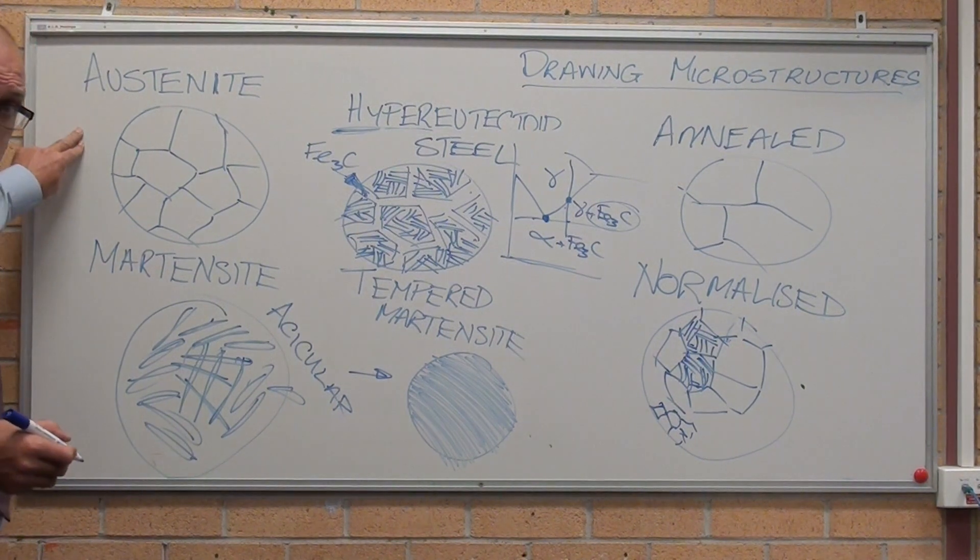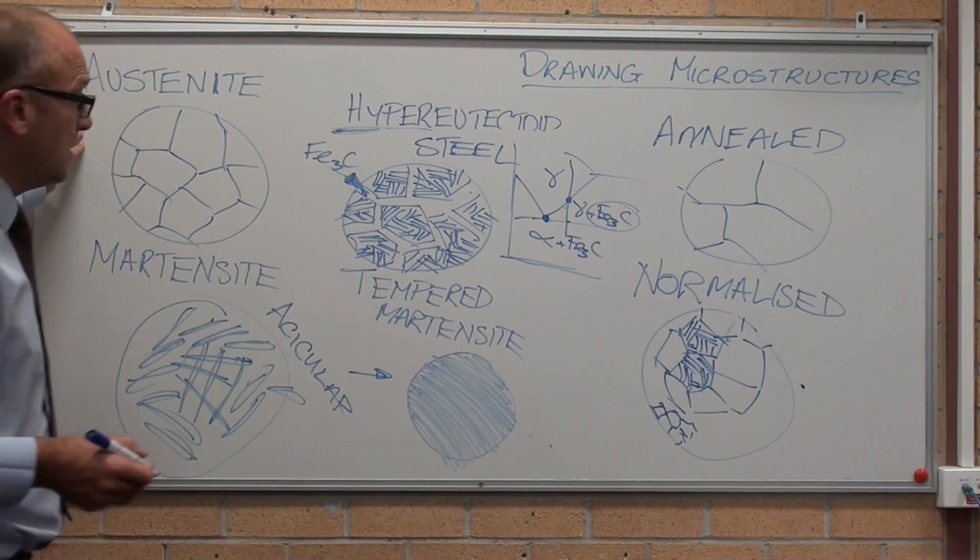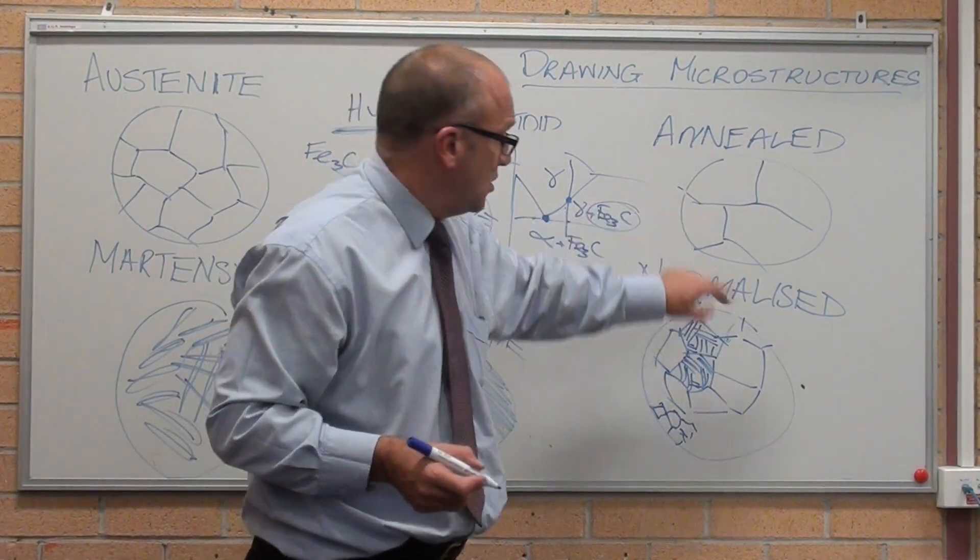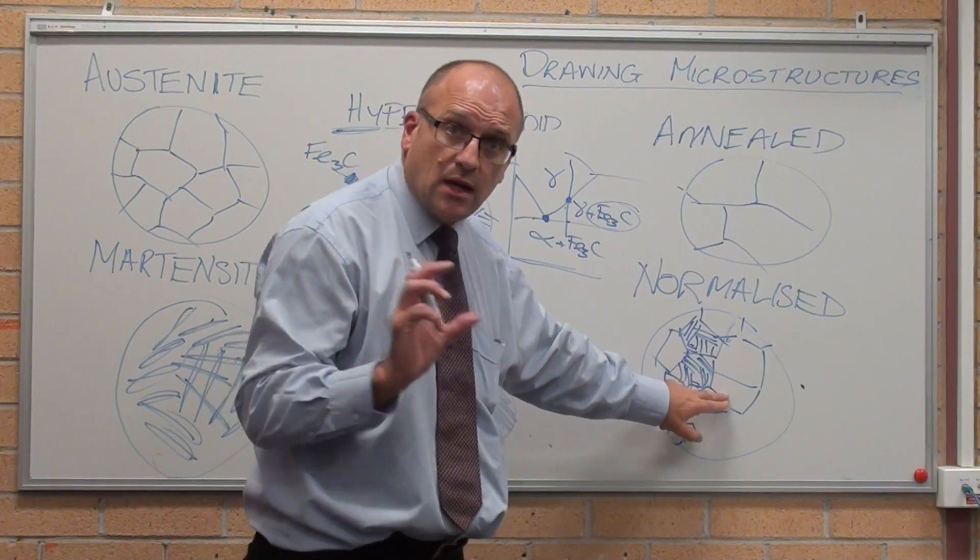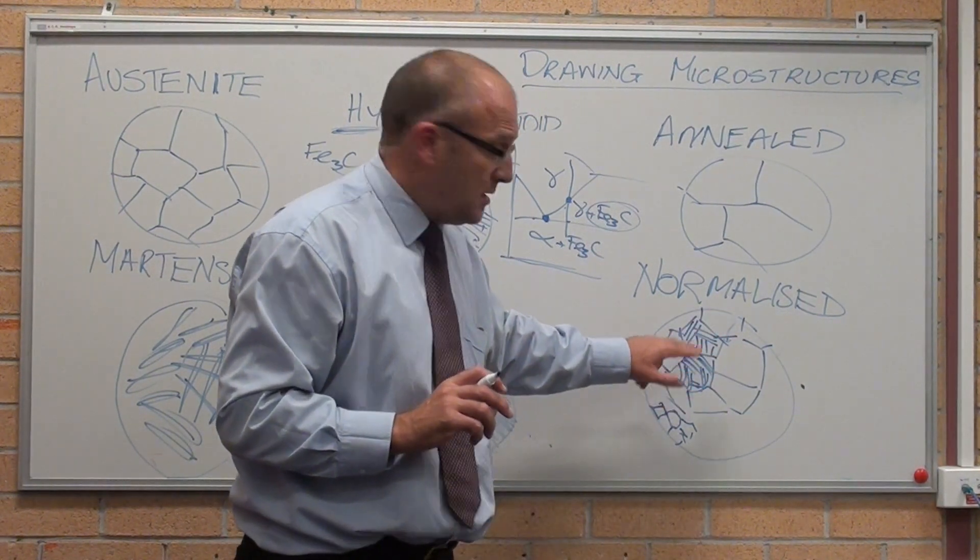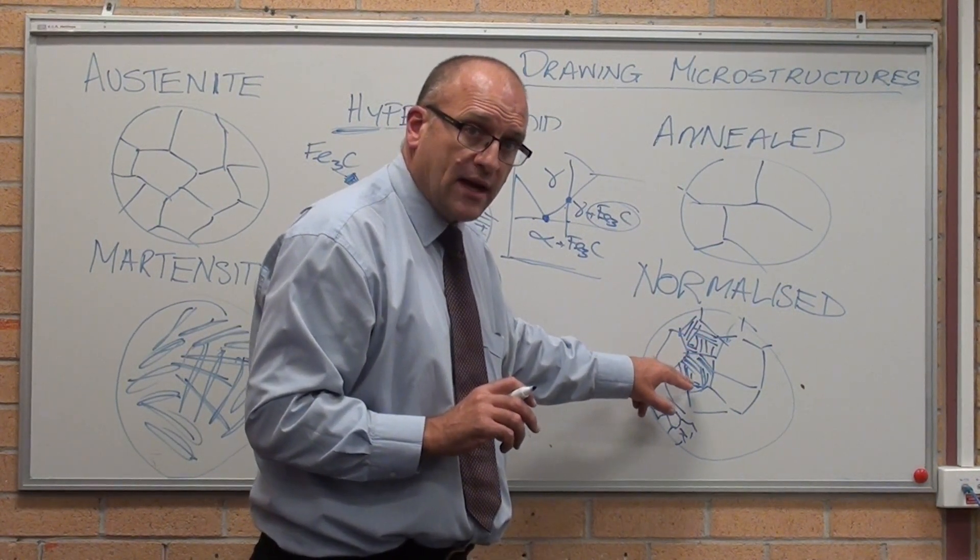So, austenite, large, uniform, equiaxed grains. Annealed, larger, uniform, equiaxed grains. Normalised is a steel-only term. Normalising produces small equiaxed grains.